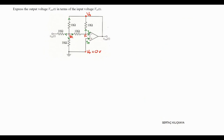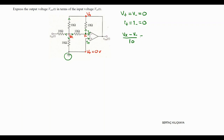Now, with this knowledge, let's try to solve the question. Since the non-inverting terminal is at ground, the inverting terminal should also be zero volts. Therefore, V plus equals V minus equals zero. Because the op amp is ideal, the currents going into the op amp's terminals should be zero: I plus equals I minus equals zero. Let me write the KCL equation at the inverting terminal. The current going into this node is Vx minus V minus over 10, and it is equal to the current going out of this node: V minus minus Vout divided by 10 ohms.